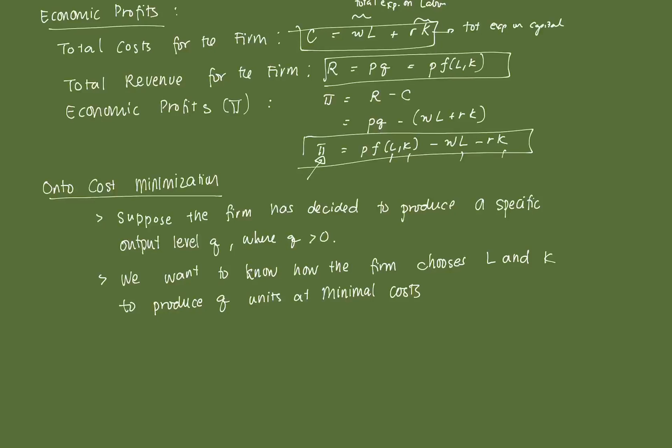And essentially, what we're going to derive from that is sort of a derived demand theory of labor and capital inputs. That is, how much of labor and capital will a firm be able to use? Will a firm opt to use, rather, to be able to meet its goal of maximizing profit.